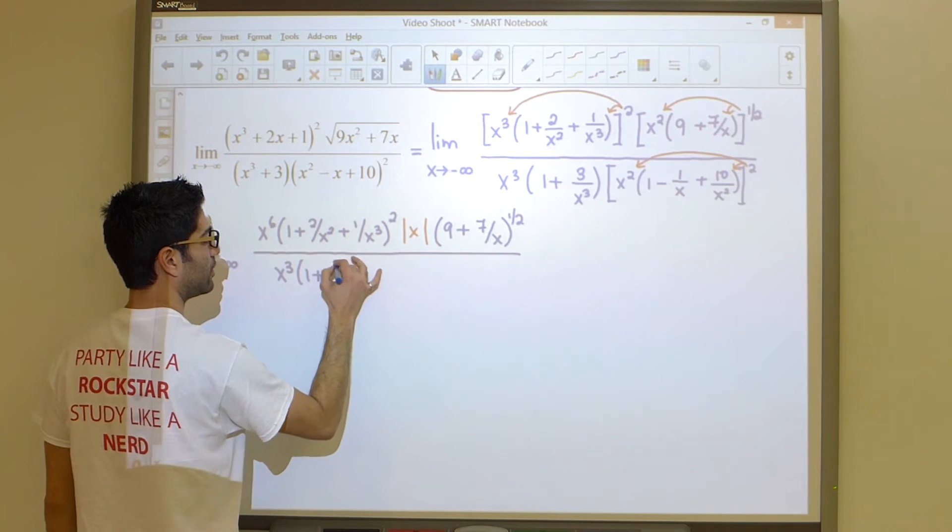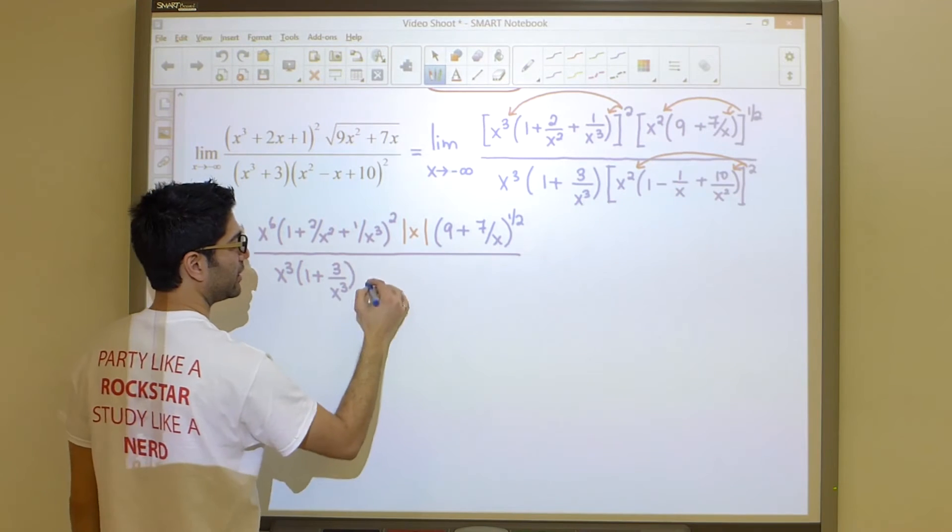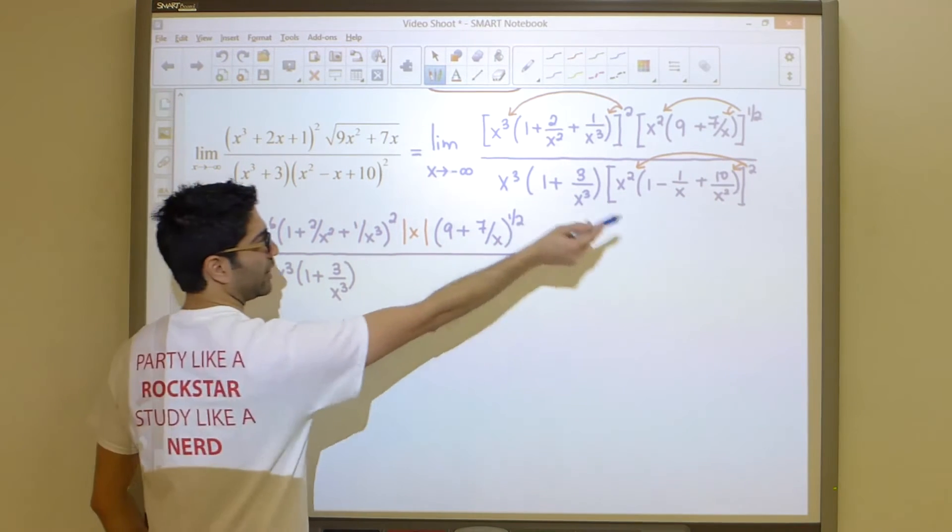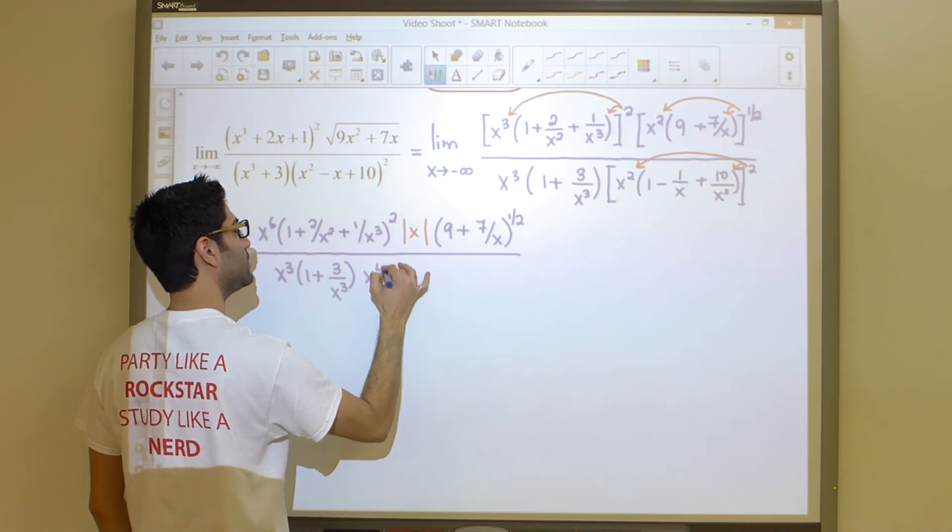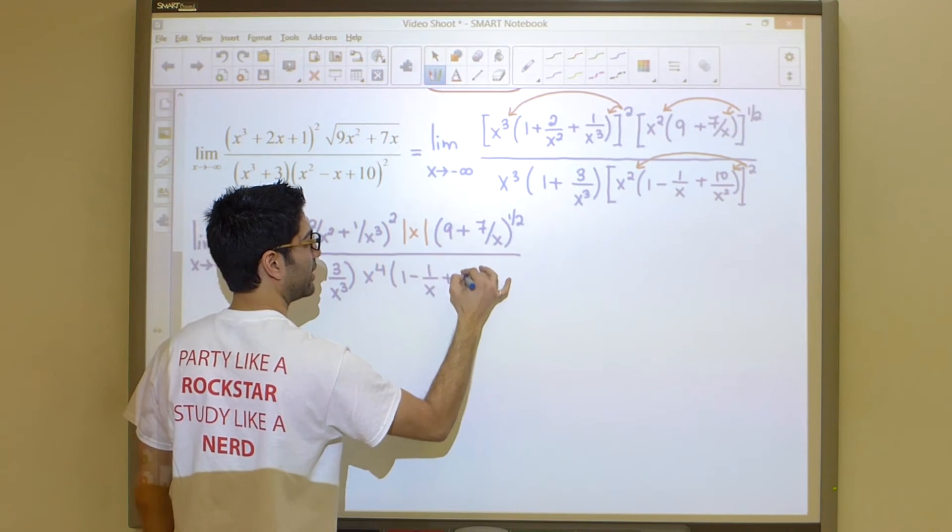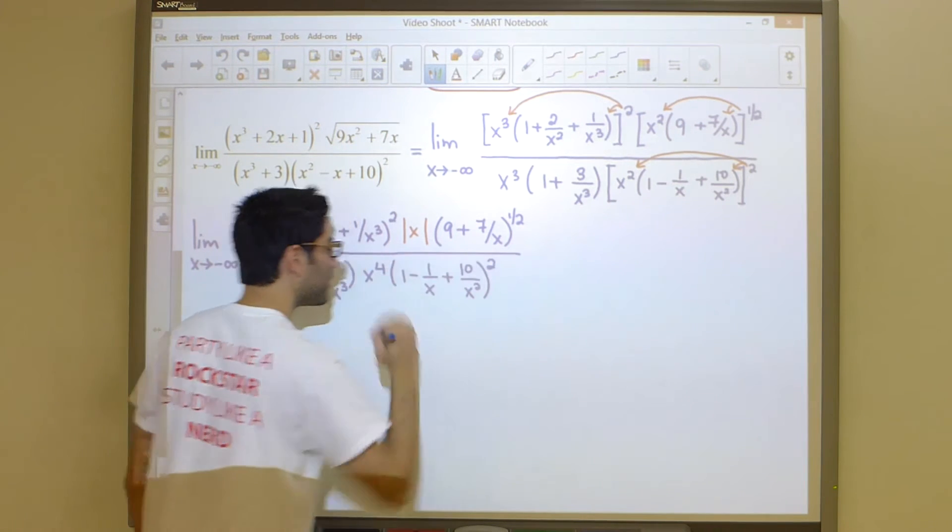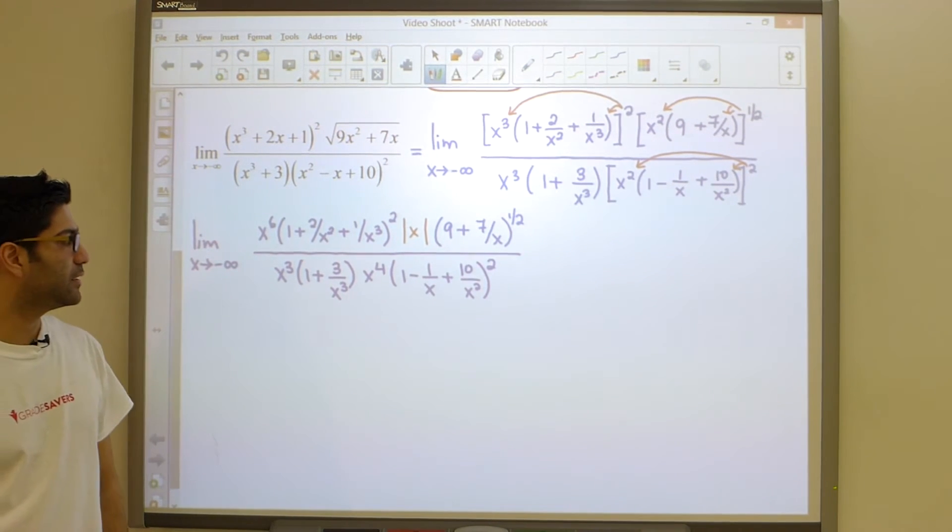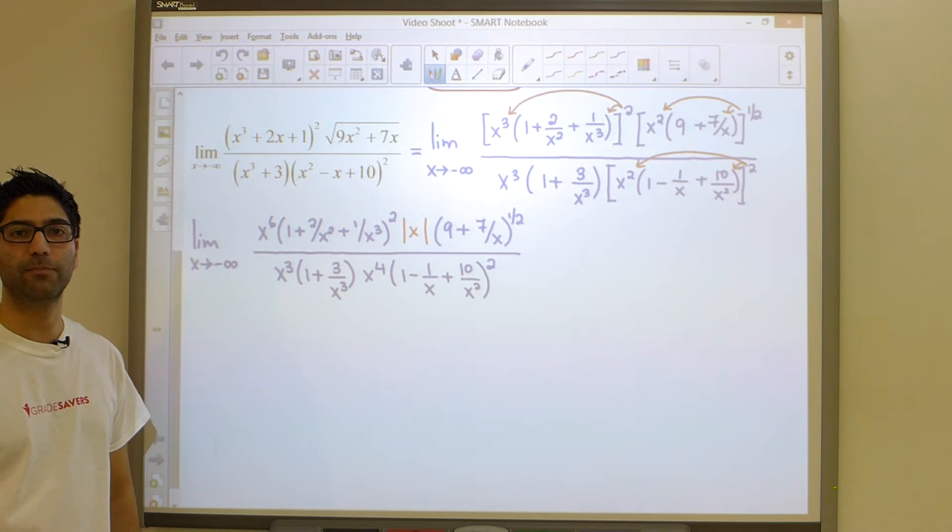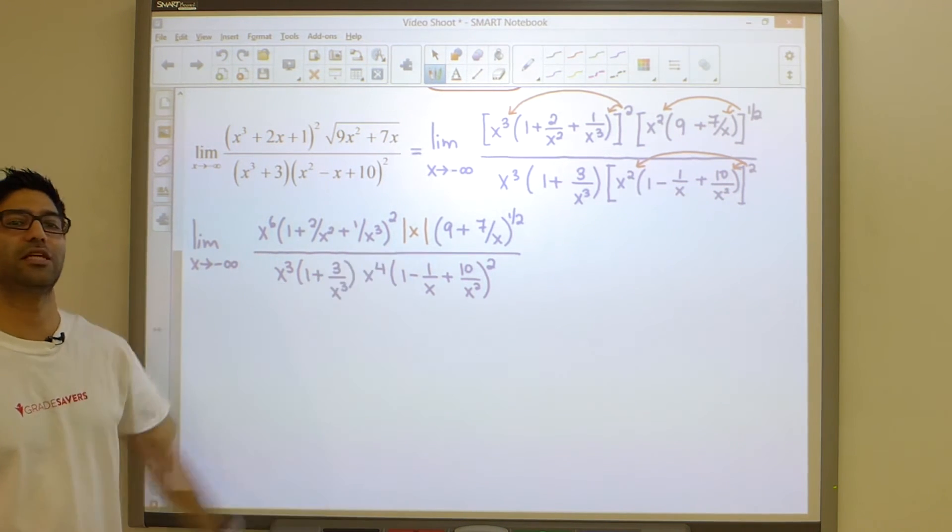The first term on the bottom stays intact, and I multiply the outside power. Once again, x squared squared is x to the 4, and the bracket remains as it is and it gets that outside exponent of 2.